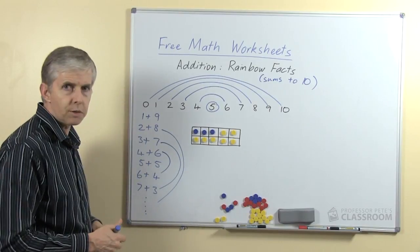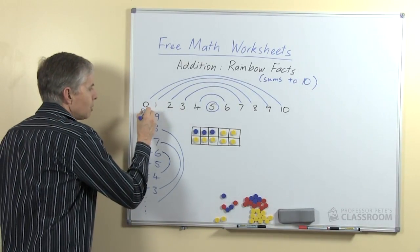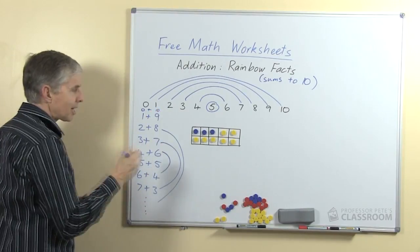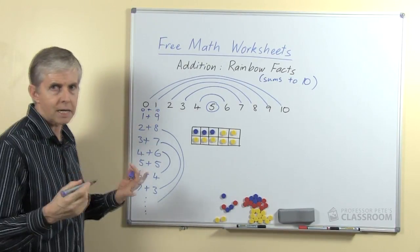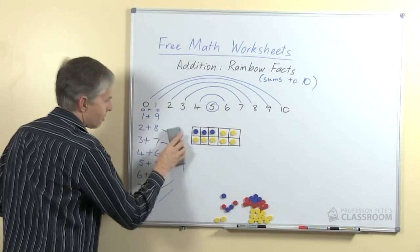So we can help the students with that. In fact, if you think about it, even if we include zero plus ten, there are only six different number facts. We're not talking about a large number of facts for the students to commit to memory.